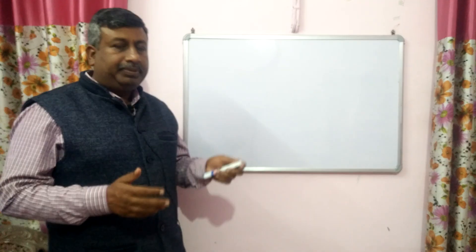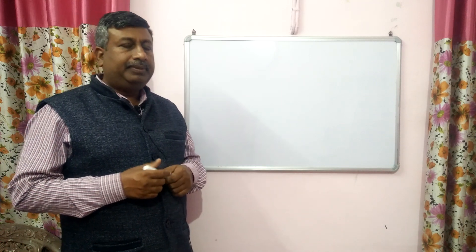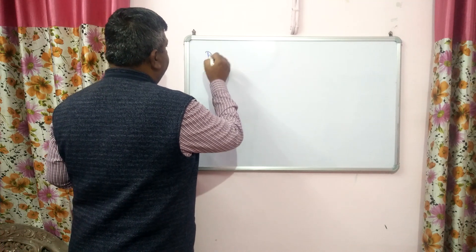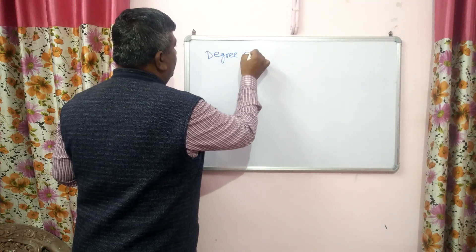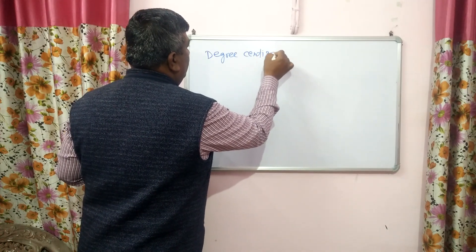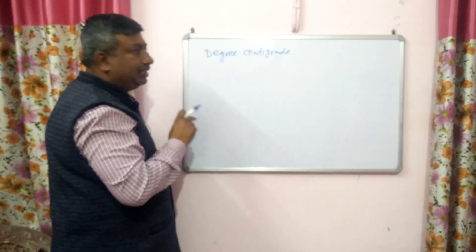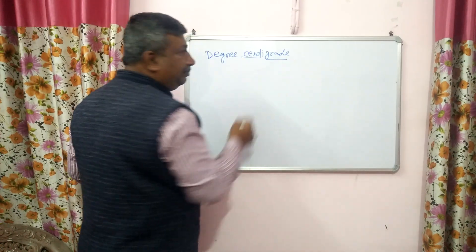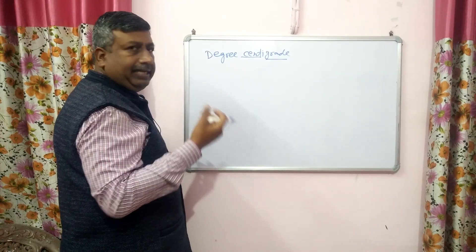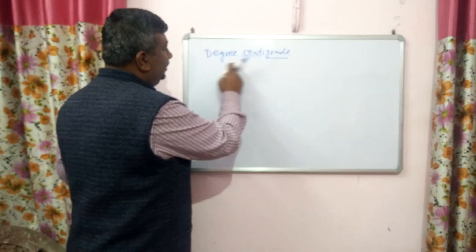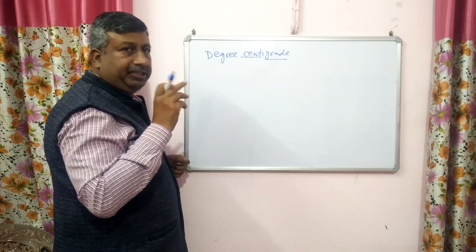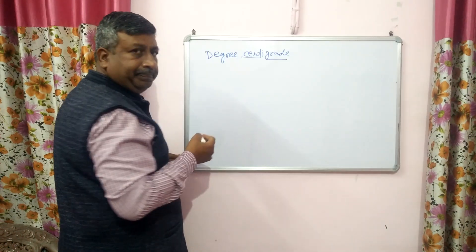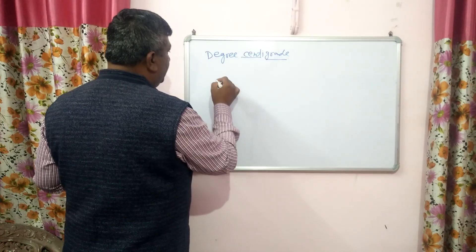Generally temperature is measured in degree centigrade; another unit is Fahrenheit. Degree centigrade is very common. The word 'degree' means division, 'centi' means hundred, and 'grade' means big division. So degree centigrade means hundred divisions. Centigrade is related with temperature, which is measured at two points.